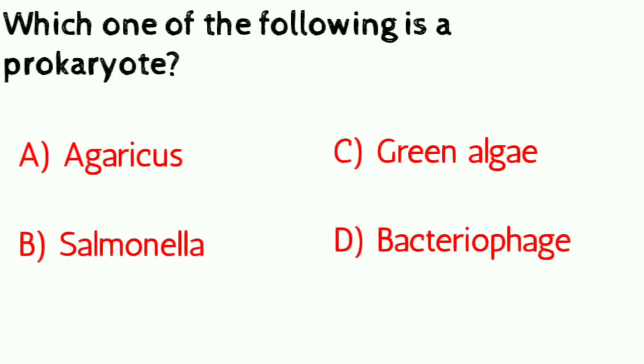Question number five: which one of the following is a prokaryote? a) Agaricus, b) Salmonella, c) green algae, d) bacteriophage. Correct answer is Salmonella.